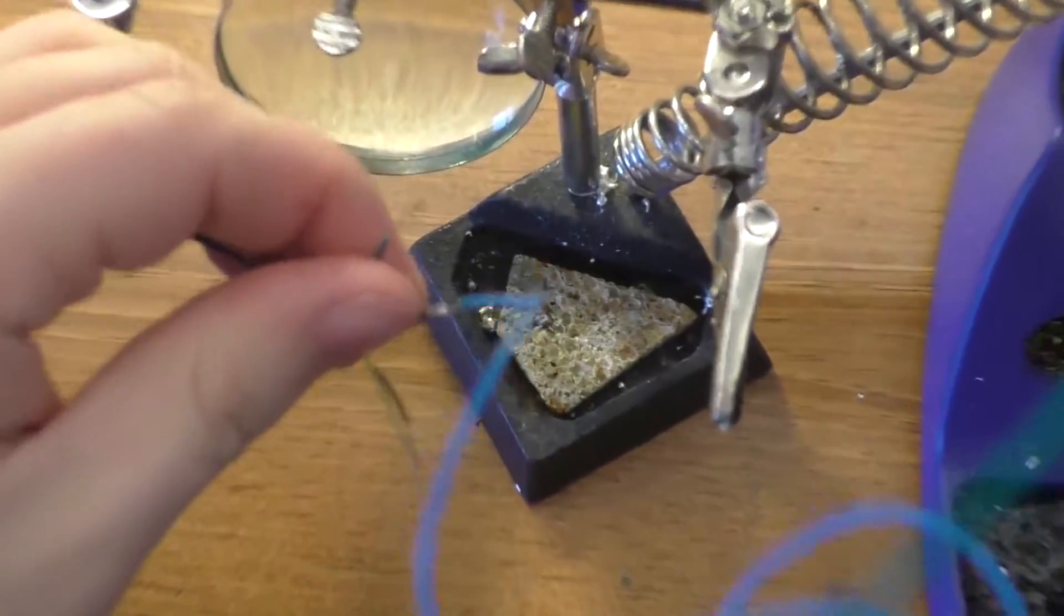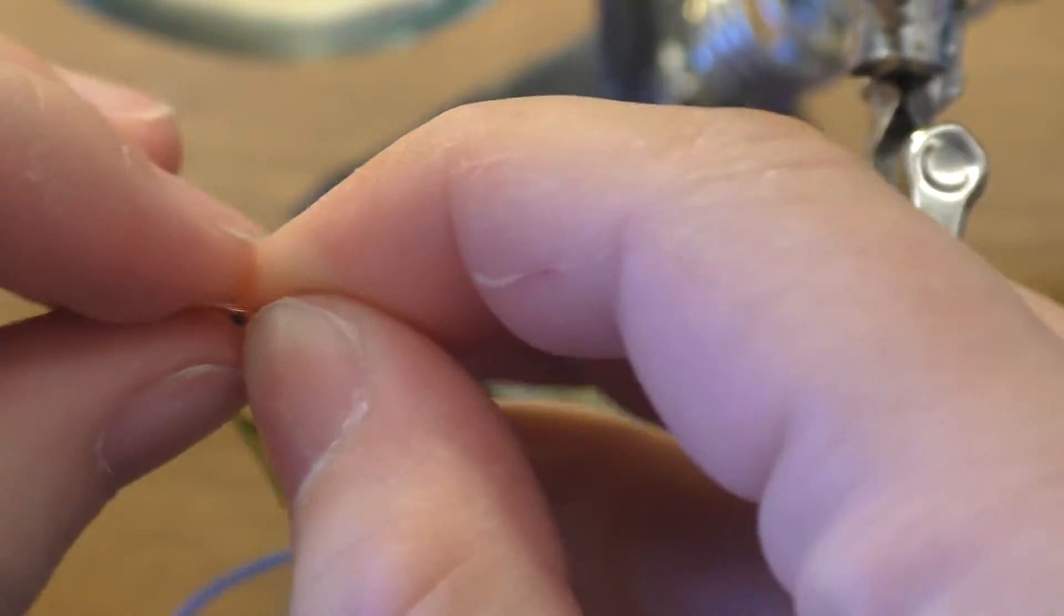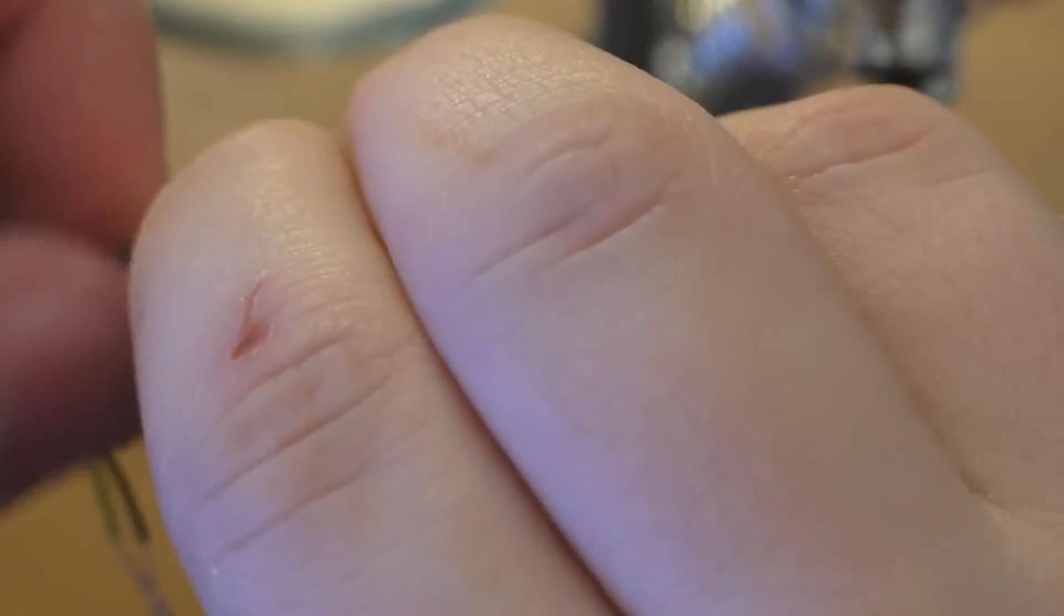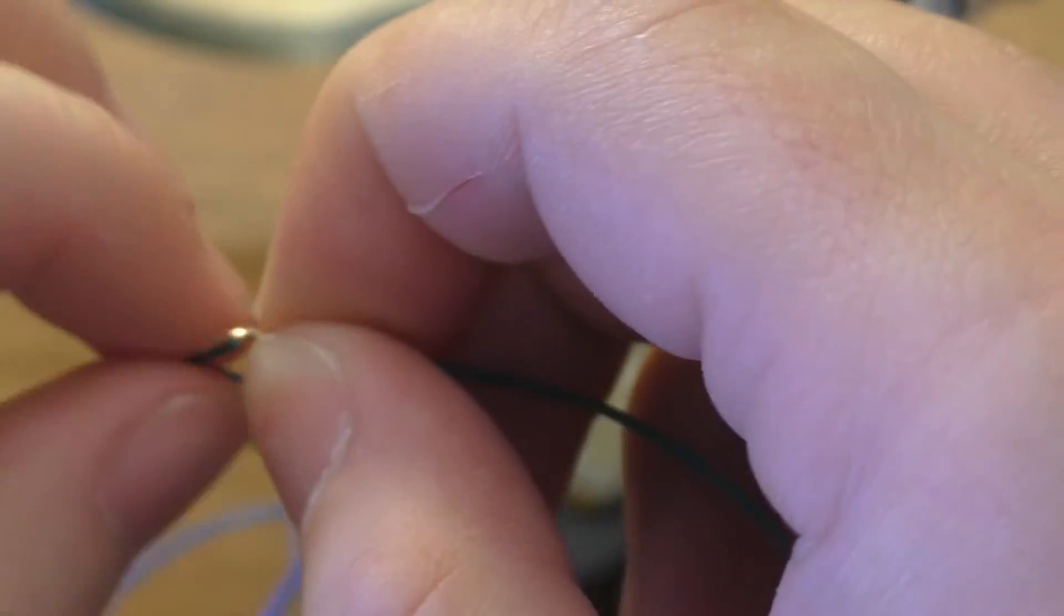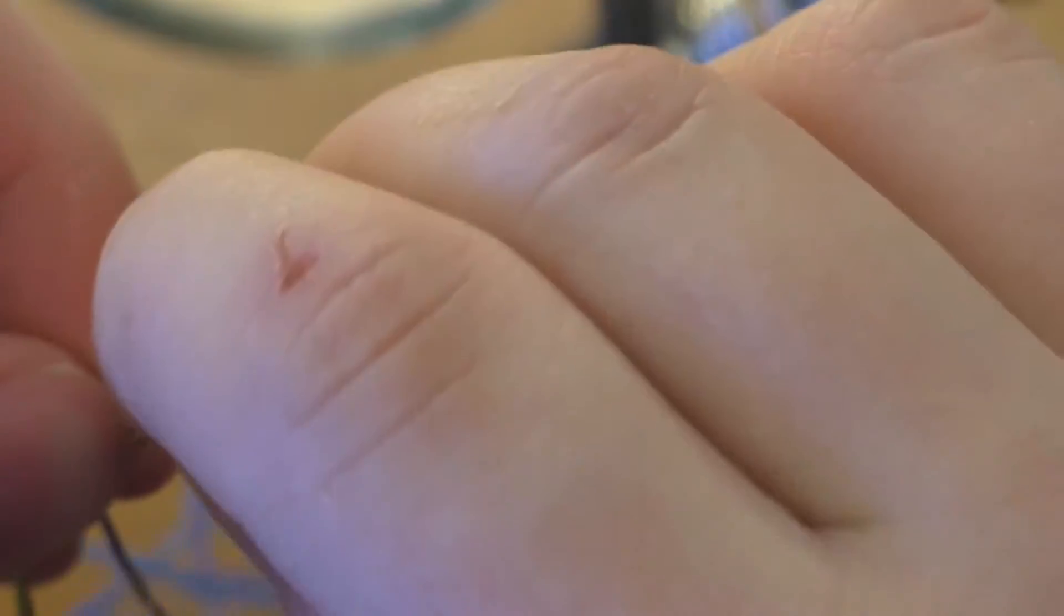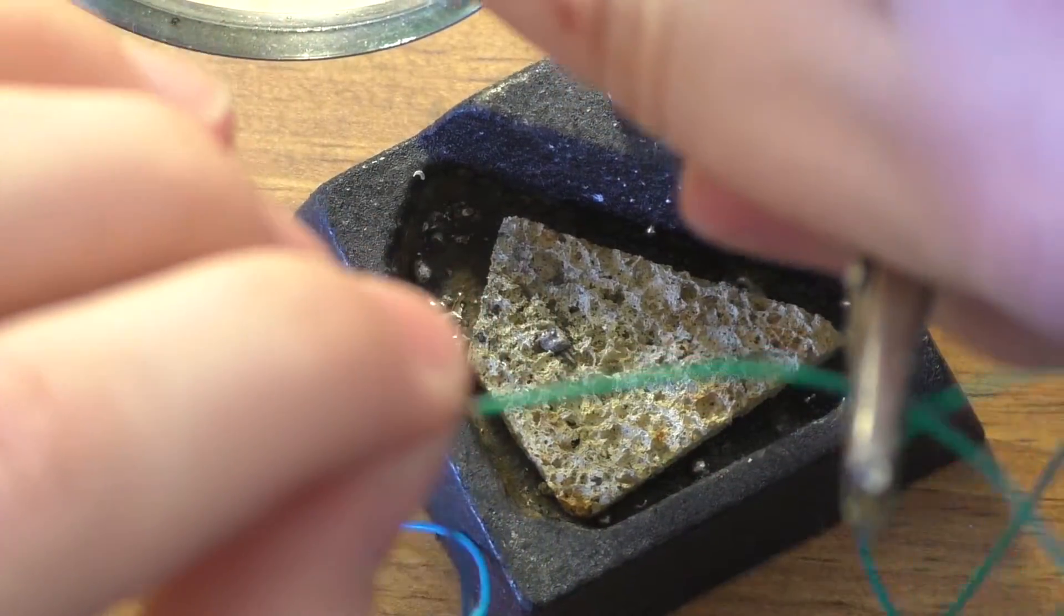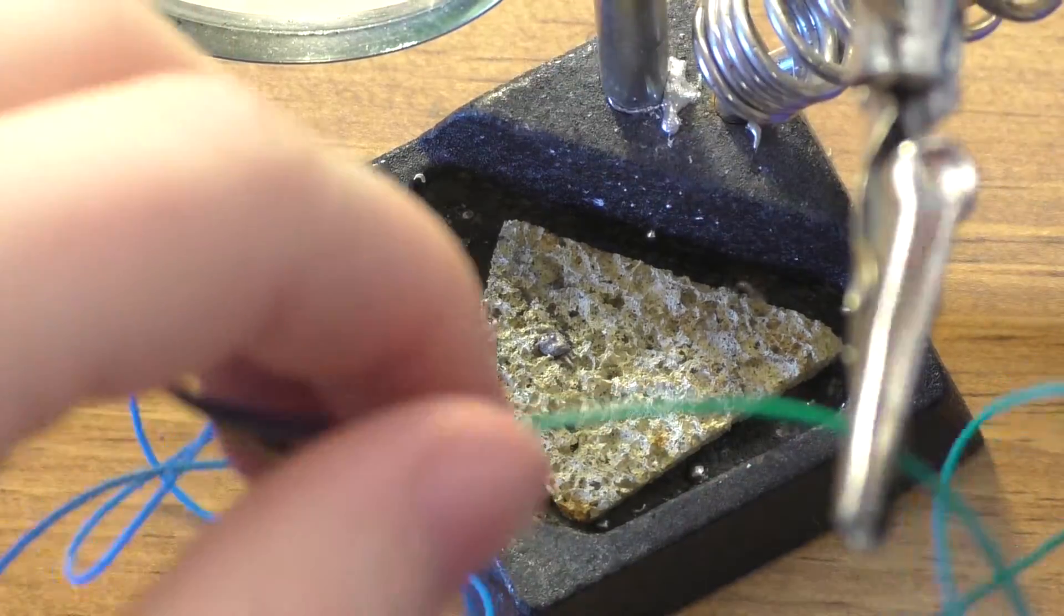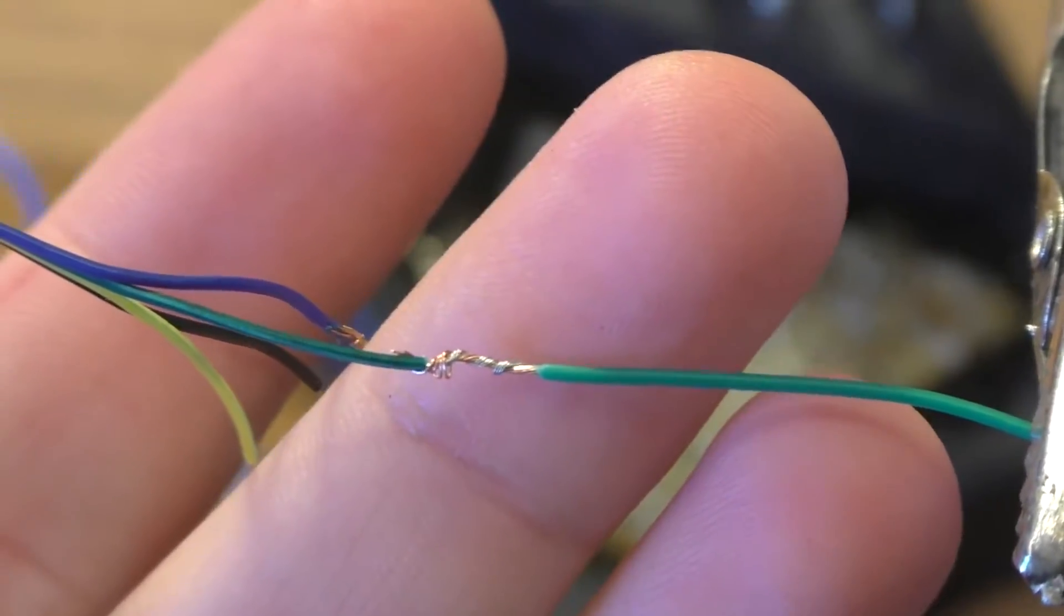Anyway, same process again. Go ahead and zoom in on that. Take the two pieces of wire, twist them together. Kind of a pain when they are this thin. You don't really want the wire going over the insulation either, but it doesn't really matter too much anyway.